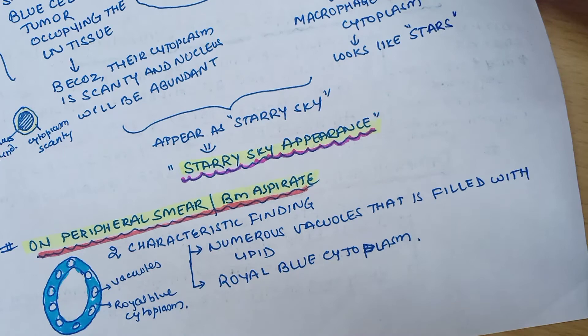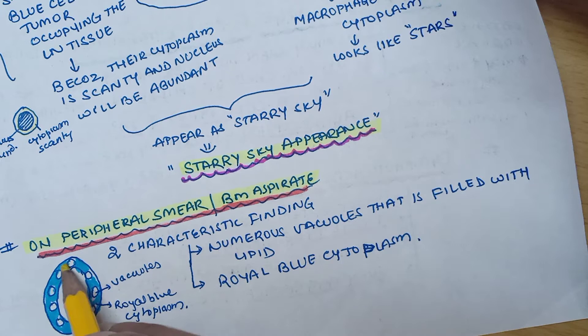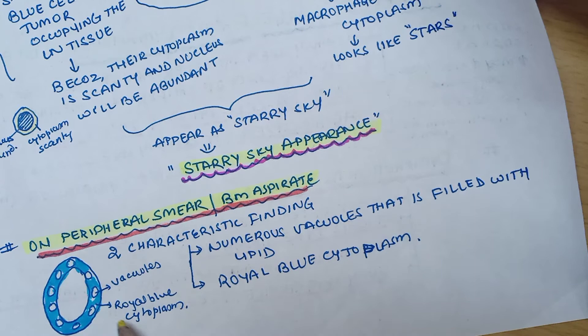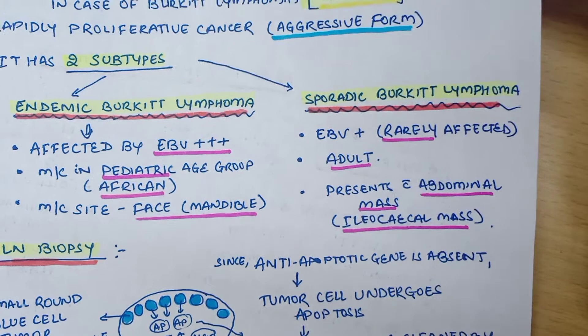On peripheral smear or bone marrow aspirate, two characteristic findings are seen: numerous vacuoles filled with lipids, and a royal blue cytoplasm.